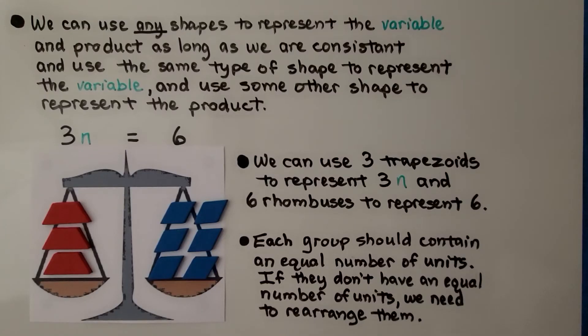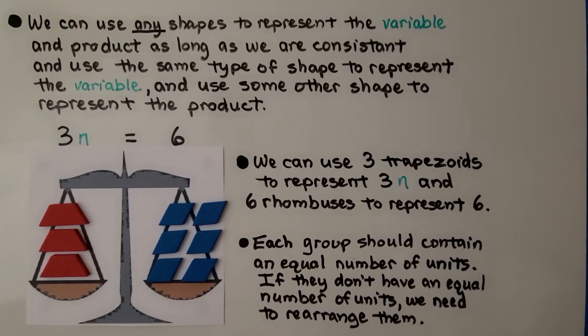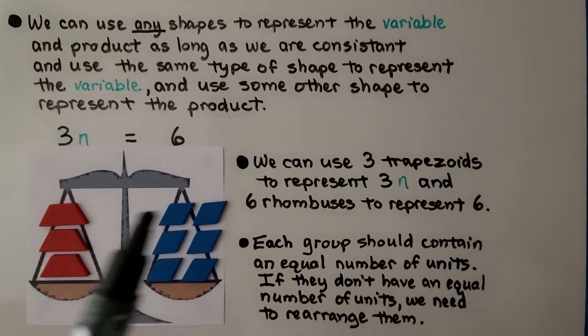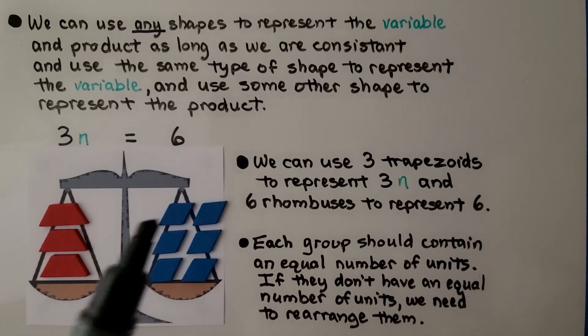We can use any shapes to represent the variable and product as long as we are consistent and use the same type of shape to represent the variable and use some other shape to represent the product. We have 3n is equal to 6. We can use three trapezoids to represent 3n and six rhombuses to represent 6. Each group should contain an equal number of units. So we have one trapezoid, two rhombuses, repeating.